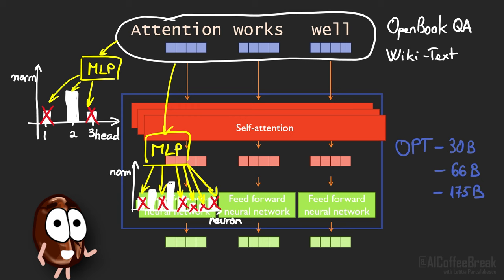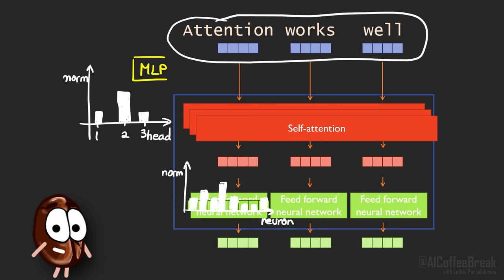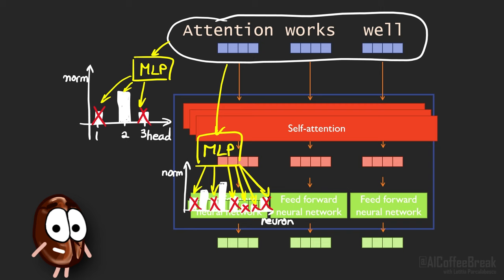They also trained the same MLP architecture for each attention layer to predict which of the attention heads has high norm. Then to sparsify the LLM for any inputs, they let it run only with the neurons and attention heads predicted by the small neural networks.